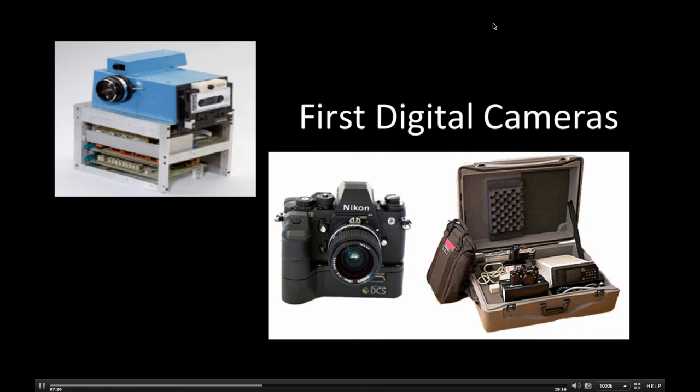For a glimpse at how far we have come: on the left we have the first digital camera, made by Kodak in 1975 — it was filmless and recorded images onto cassette tape. On the right, you have the first real digital camera, the DCS-100 from 1991, complete with an enormous battery pack and 200 megabytes of image storage. The kit weighed 55 pounds.